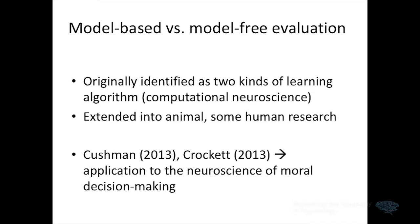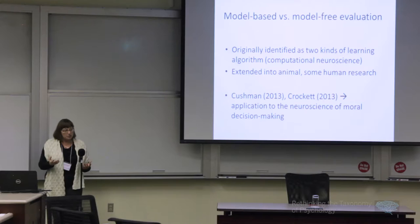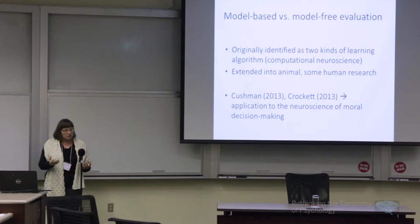I want to turn instead to a possible alternative explanation of what's going on, not behaviorally — because I think that's pretty clear — but in the brain. In two papers both published in 2013, Fiery Cushman and Molly Crockett have suggested independently that a better way of understanding dual processing in the neuroscience of moral judgment is not the strict System 1 / System 2 approach Greene adopts, but what they call model-based versus model-free evaluation, drawing on literature from machine learning and computational neuroscience.